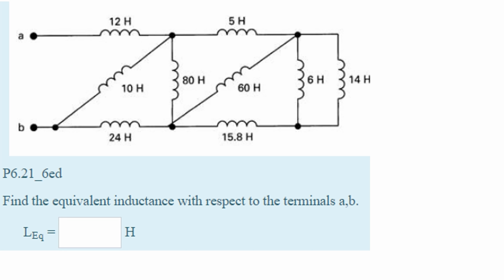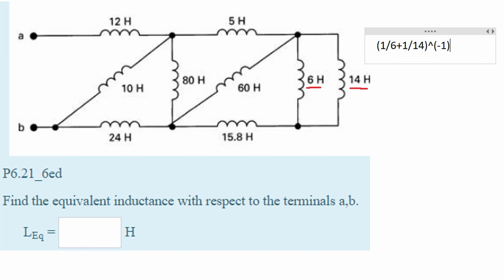Starting from the far right side, we can see that we have this 6 Henry and this 14 Henry in parallel. We're going to plug into the parallel formula, which is 1 over the first inductance plus 1 over the second inductance raised to the negative first power. If we do this we get 4.2.